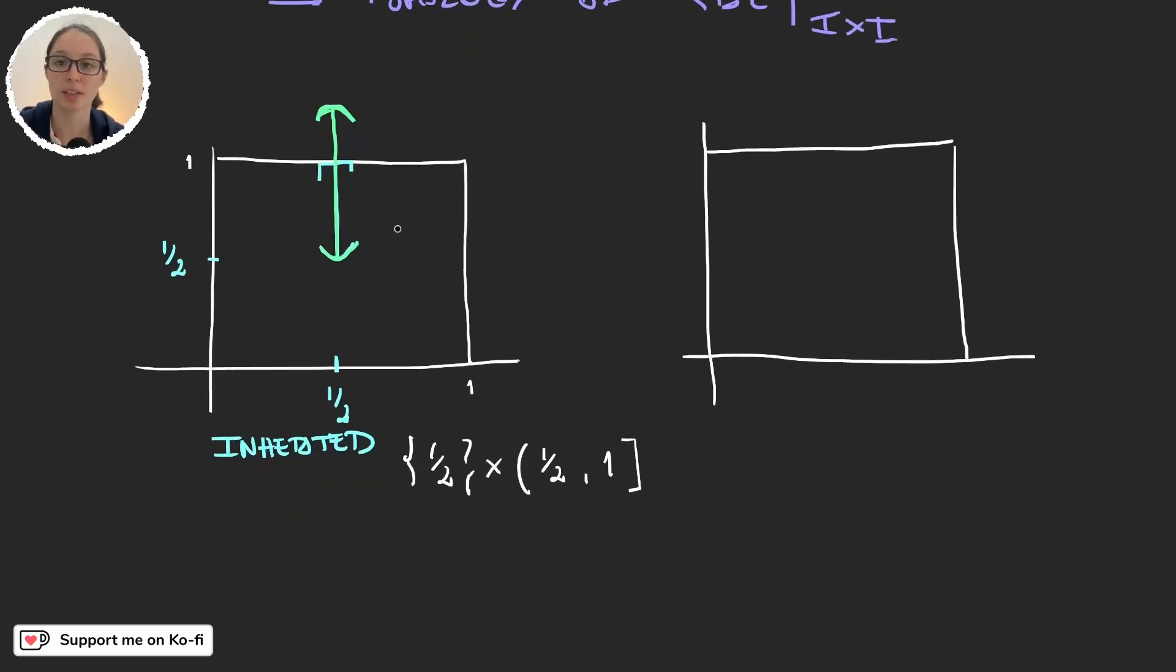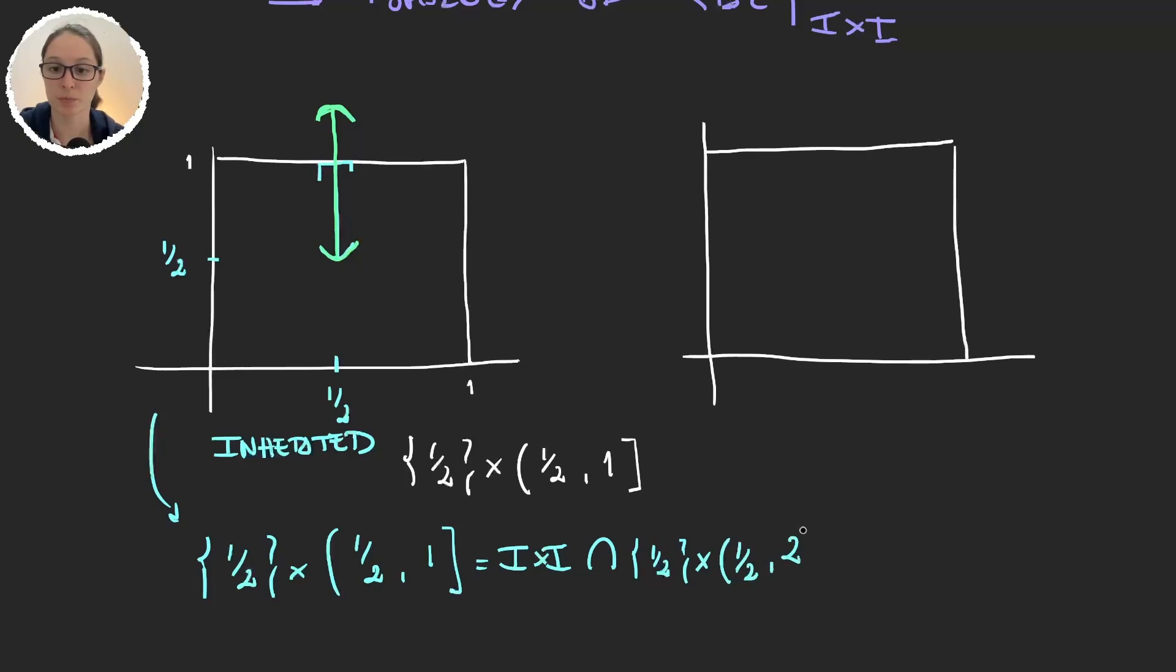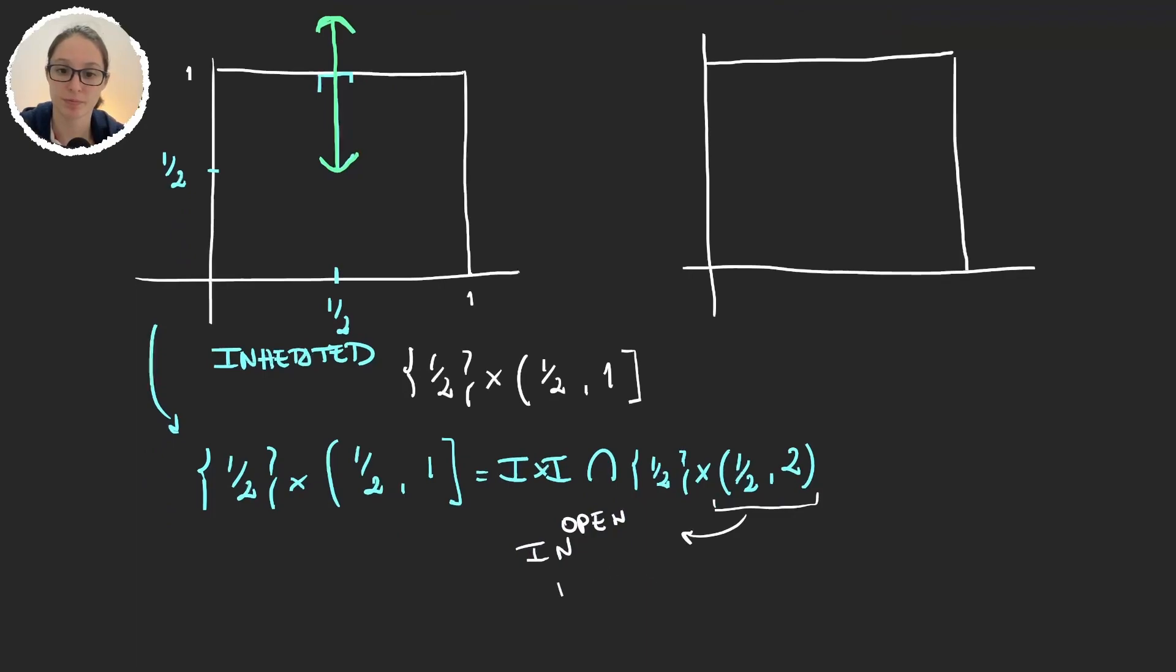And for example this set can be written as this open interval intersection of unit square. So in the inherited topology this set, the 1/2 times [1/2, 1], is I times I intersection the 1/2 times for example (1/2, 2). And because the (1/2, 2) is open in the plane with the dictionary order topology, then the intersection with the unit square will be open in the unit square with the subspace topology.